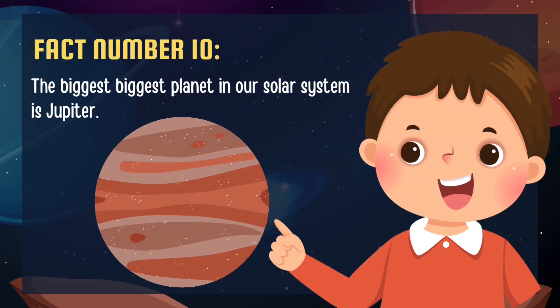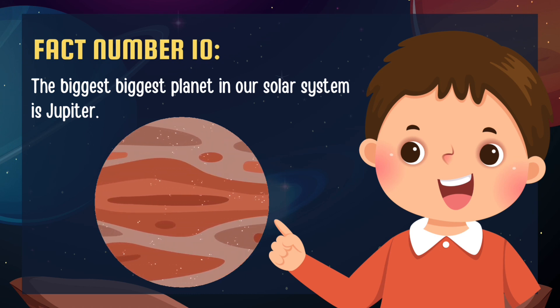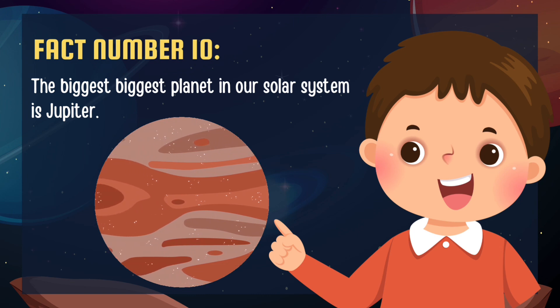Fact number 10. Did you know that the biggest planet in our solar system is Jupiter? It's so gigantic that you could fit more than 1,300 Earths inside it.